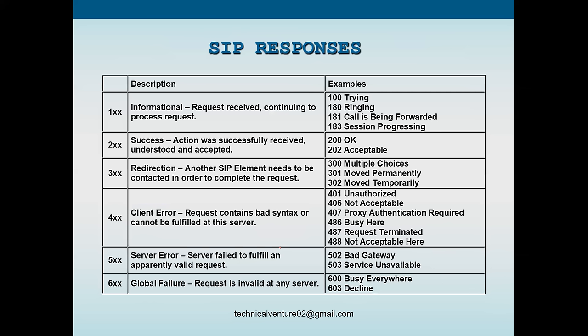SIP has six response categories. 1xx is informational - provisional responses like '100 Trying' (request received, processing) and '180 Ringing'. After '100 Trying', responses can be 180, 181, or 183 depending on what User Agent 2 is doing. 1xx are provisional - not final responses. 2xx means success - the action was successfully received, understood, and accepted, such as '200 OK' or '202 Accepted'.